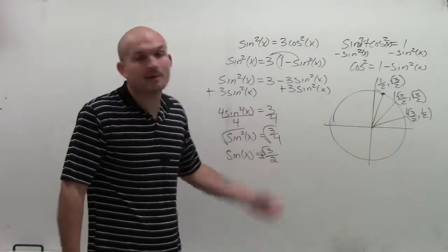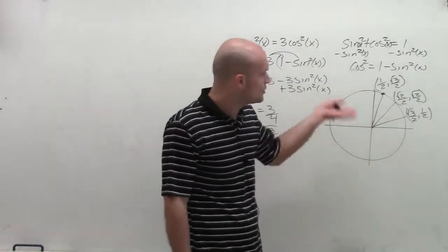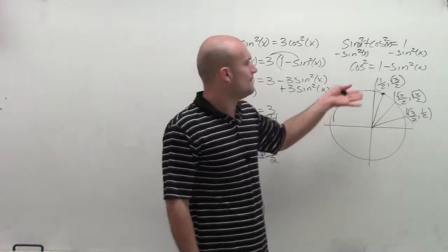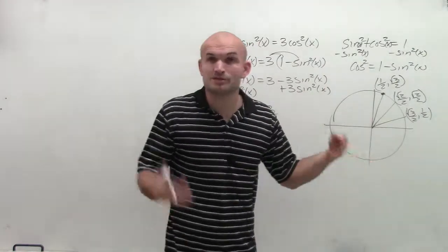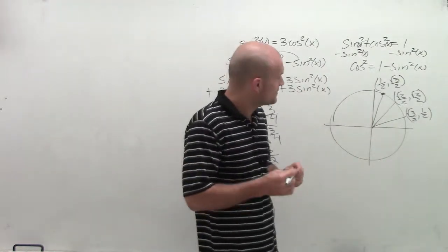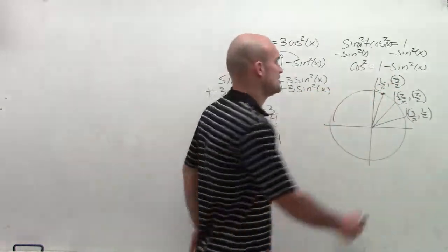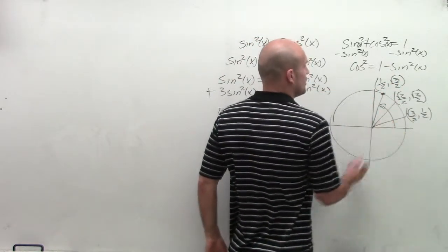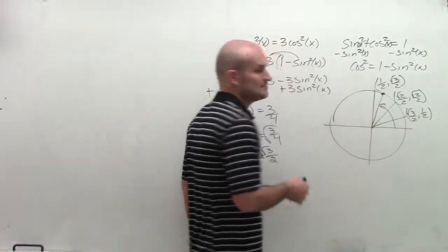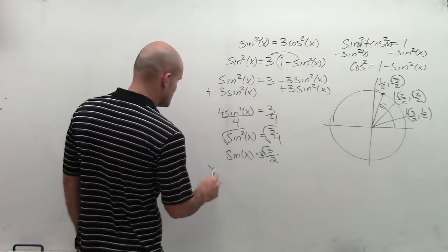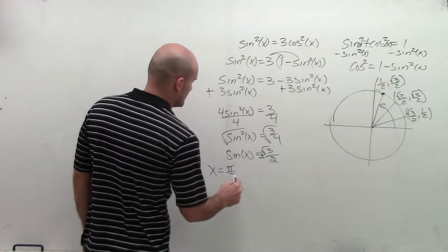So let's just kind of look at the positive values, right? So when is my y value equal to square root of 3 divided by 2? Because sine represents the y coordinates on a point. And what you notice is I have at this point right here. So I need to understand what is this angle. Well, this angle is at pi over 3. So I can say one solution is x equals pi over 3.